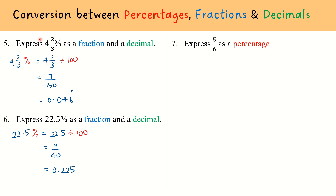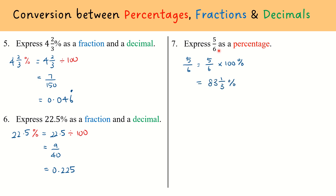Now that we have done conversion of a percentage into a fraction and decimal, let's look at what if I'm given a fraction and want to convert it into a percentage. When given a number and I want to convert it into a percentage, I need to multiply by 100%. So 5 over 6 equals 5 over 6 times 100%. We must include the percentage sign to maintain the equivalence. Keying 5 over 6 times 100 into the calculator — without the percentage sign — you get 83 and 1 over 3.